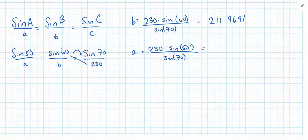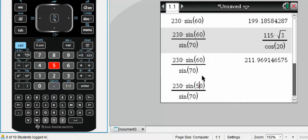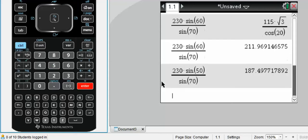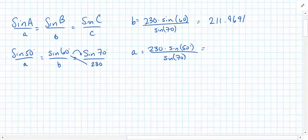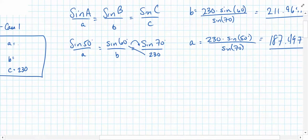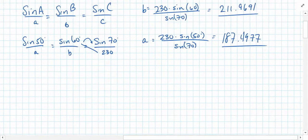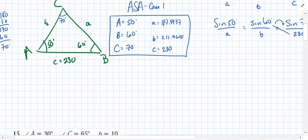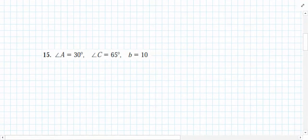Similarly, for side length A, all that we need is 230 times sine of 50 divided by sine of 70. So back at our calculator, I recalled the last calculation, and I've changed the 60 to a 50. We see that that side length has to be 187.4977. And this gives us enough information to finish the triangle. A is equal to 187.4977. B is equal to 211.9691. And we have this triangle solved.